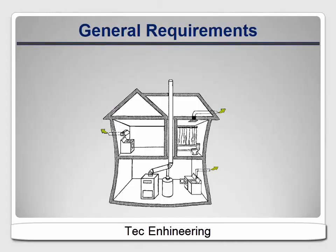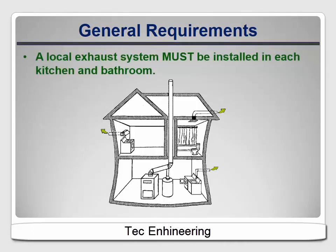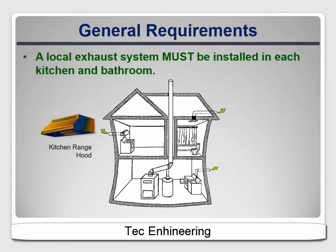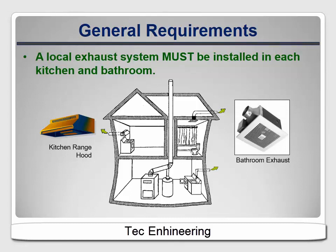ASHRAE 62.2 says that a local exhaust system must be installed in each kitchen and bath. Remember that this was written for new construction; we'll come back to the requirements for existing homes later. In kitchens, the solution is typically a range hood or a fan integrated into an over-range microwave. In bathrooms, it's usually a ceiling-mounted fan.